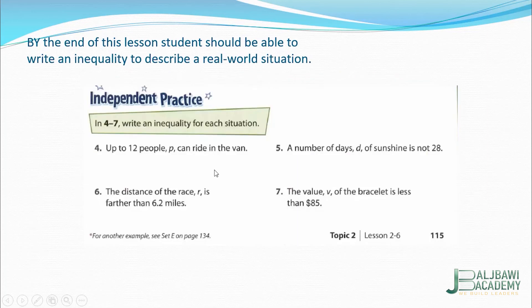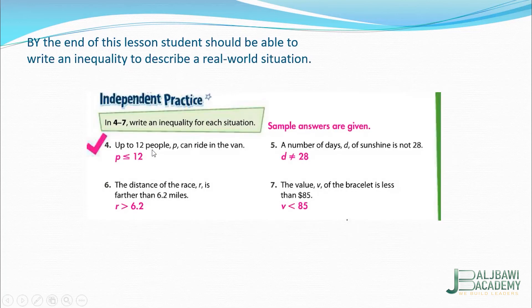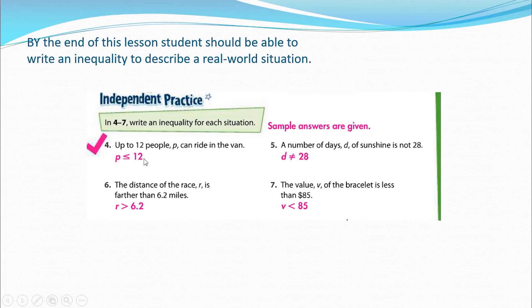Now here we have some more examples. I will show and explain the answers. Up to 12 people P can ride in the van. So this van can hold 12 people or less, but we can't put more than 12. So we write P is less than or equal to 12, because the number can be 12.